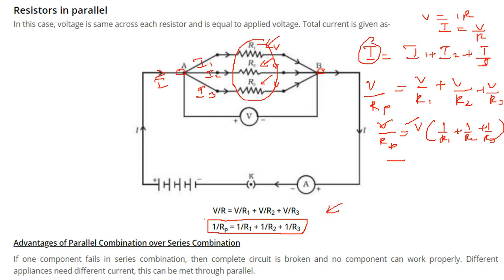There is certain advantage of parallel combination over series combination. See, if one component fails here, the circuit will remain intact, it will not be broken. But if you connect them in series, this is broken. The series or the connection or the circuit will be broken. Different appliances need different current. This can be made through the parallelism if you put these resistances in parallelism.